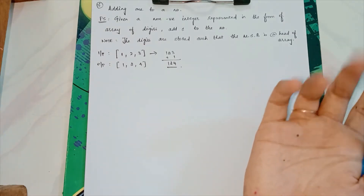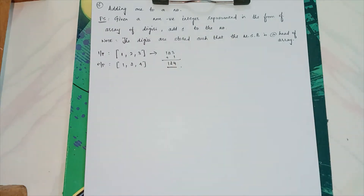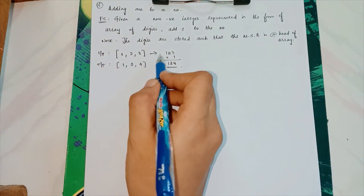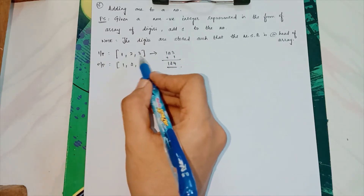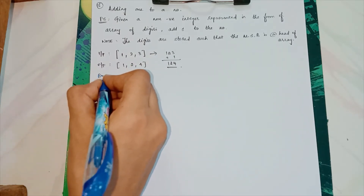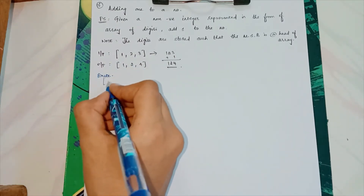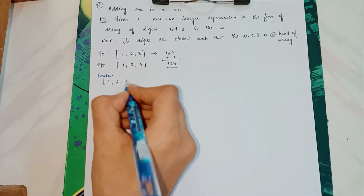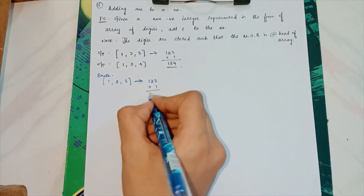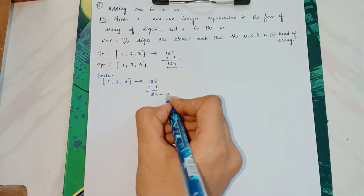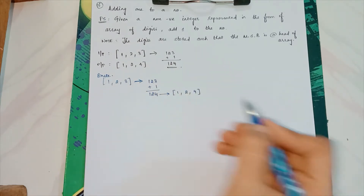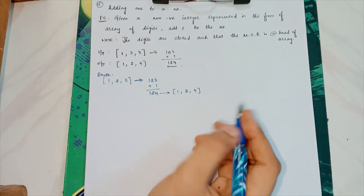The basic thing that strikes your mind when you see this question is: they have given an array of digits, where [1, 2, 3] is nothing but 123. So let's go with the brute force approach first. I am going to convert [1, 2, 3] into 123, then simply add 1 to get 124, and then split 124 back into an array of digits [1, 2, 4] and display it as output.